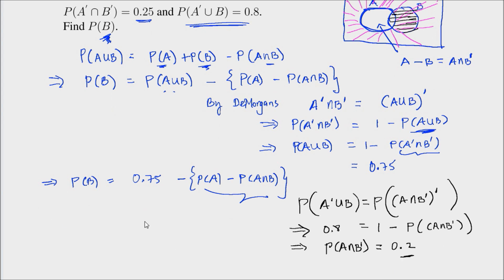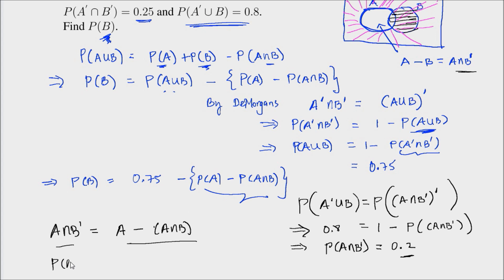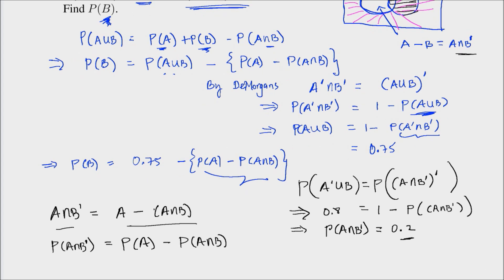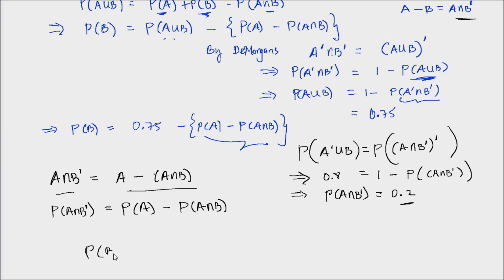What is A intersection B complement? A intersection B complement equals A minus A intersection B. Therefore, the probability of A intersection B complement equals P(A) minus P(A intersection B), which is the expression in parenthesis here. Therefore, the probability of B equals 0.75 minus 0.2, which is 0.55.